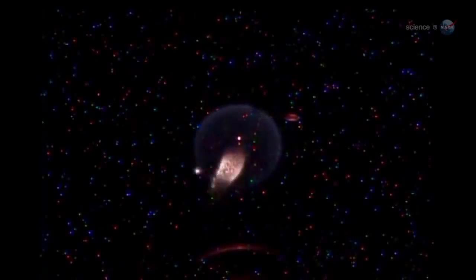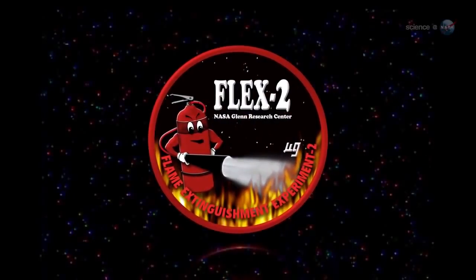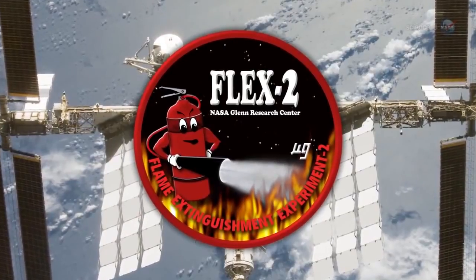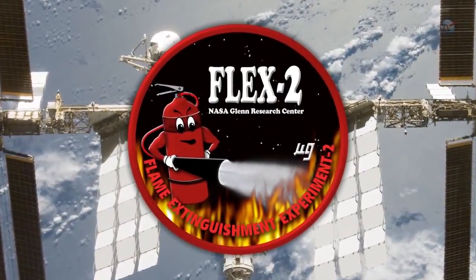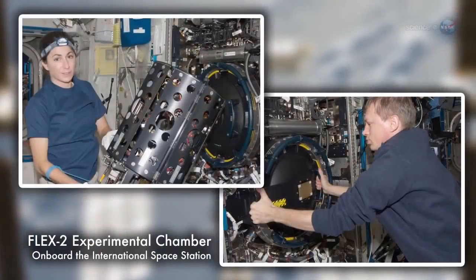Wiseman was running an experiment called FLEX-2, short for Flame Extinguishment Experiment 2. The goal of the research is to learn how fires burn in microgravity and, moreover, how to put them out. It's a basic safety issue. If fire ever breaks out onboard a spacecraft, astronauts need to be able to control it.